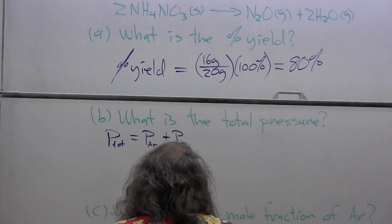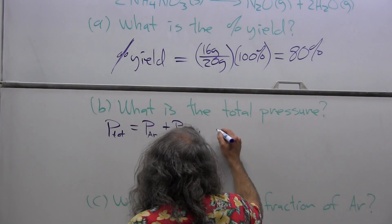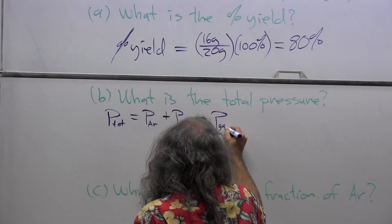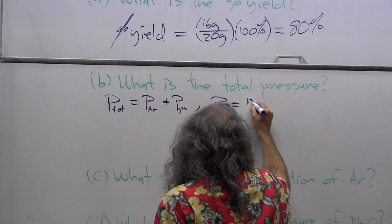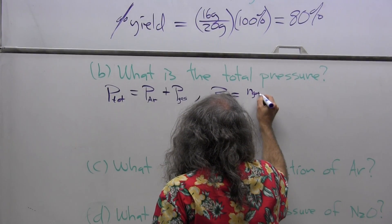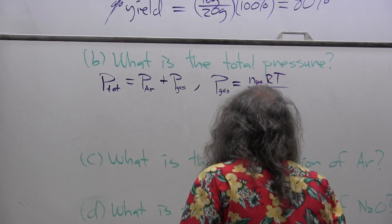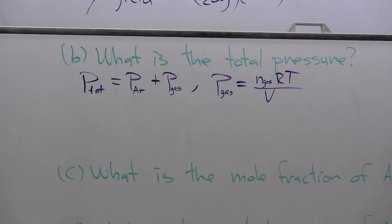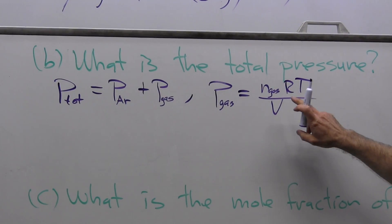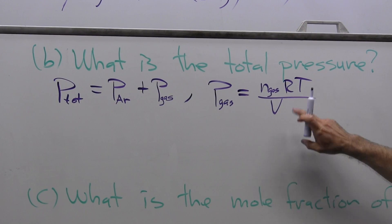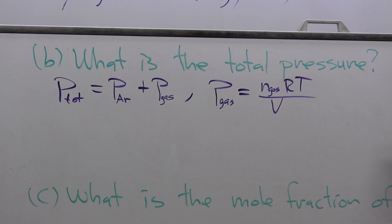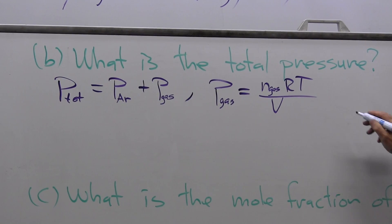And the pressure of the gas, P_gas, is going to be equal to n_gas RT over the volume. And so now all that remains is to solve for this problem. I'm going to need to know how many moles of gas there are.